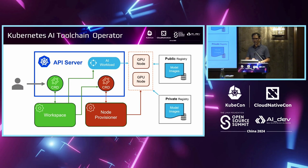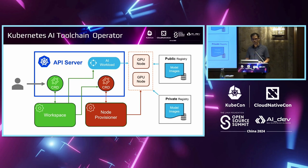This is a high-level architecture diagram of Kaito. You have two CRDs: the workspace CRD and the node provisioner CRD. The node provisioner CRD is optional. Today we'll be replacing that part with nodes managed by AKS node pools and the GPU operator. The workspace CRD is mainly looking at making sure your inference and fine-tuning workloads are configured properly and shows various statuses. Kaito also has a set of predefined LLMs which are commonly used, like the Llama models, pushed to the registry and fetched during runtime as needed. It's also configurable to add other models.